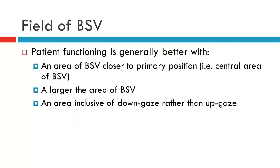Generally speaking, if the area of BSV is in prime position or close to prime position, this will be better for the patient. It is easier if, when you're looking straight ahead, you have an area of BSV. If it's out in the periphery, it's much more difficult for the patient to achieve BSV in their day-to-day activities. It's better if you have a larger area of BSV, as the more area of BSV you have, the more opportunity the patient has. Down gaze is better to have BSV than up gaze because up gaze we don't use as regularly — down gaze is a much more utilised position, particularly in activities such as reading.